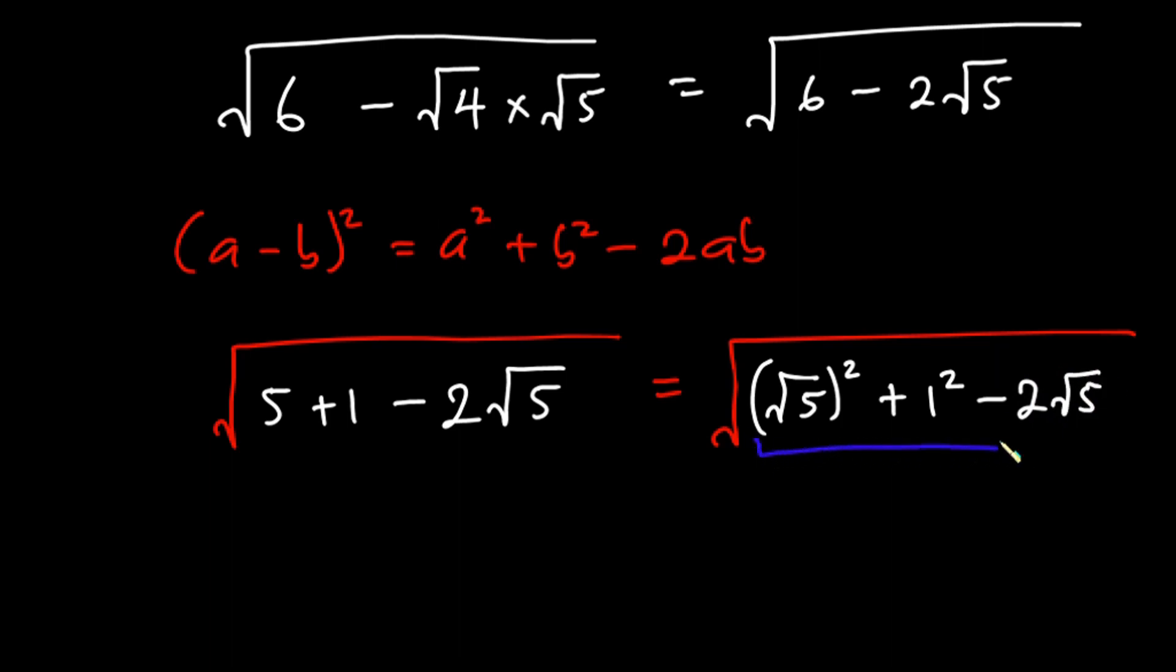Now we can compare this whole expression to what we have here. We can see that square root of 5 is a, 1 is b. Then we have this to be a, but from this whole thing we don't have b, so we can multiply this by 1 so that this will be our b, and it's the same thing.